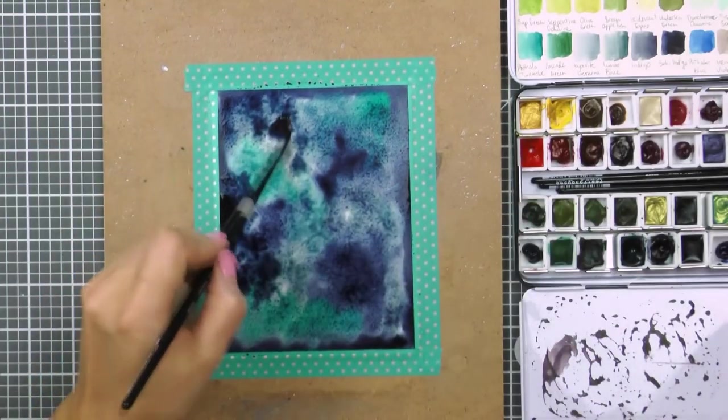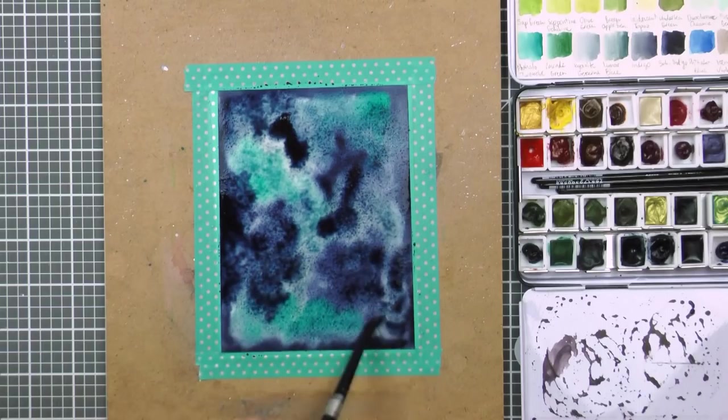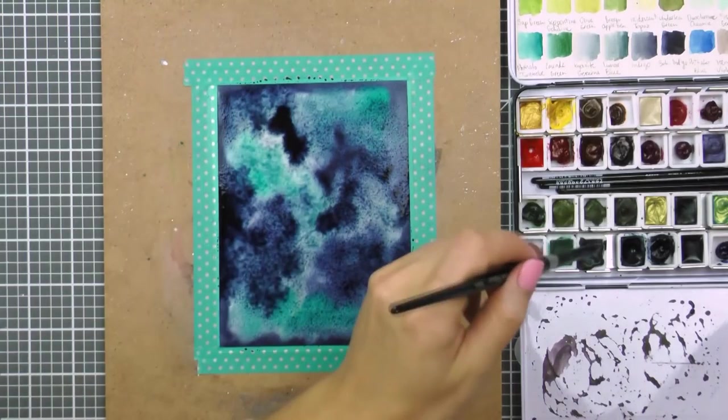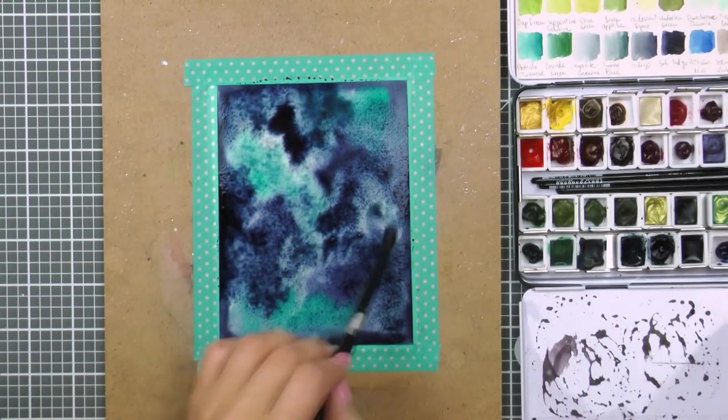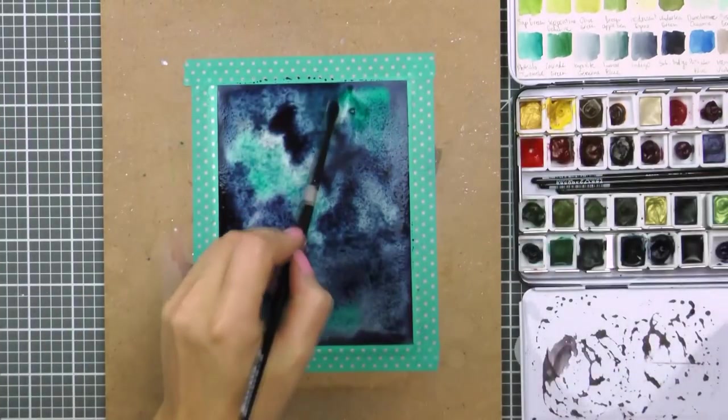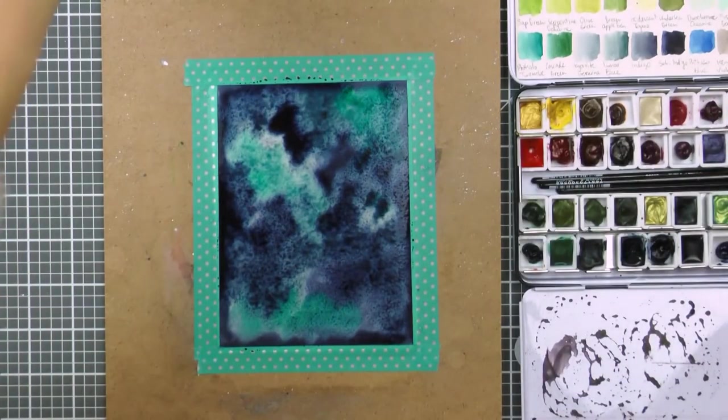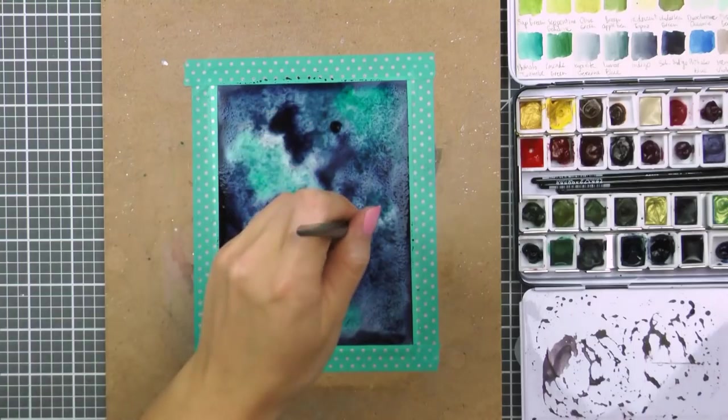I'm also adding Lunar Blue. This is another color I use very often, especially for galaxies, and finally I'm adding Ultramarine Turquoise here. I'm going to come back and add more Indigo and more Lunar Blue until I'm happy with my background.